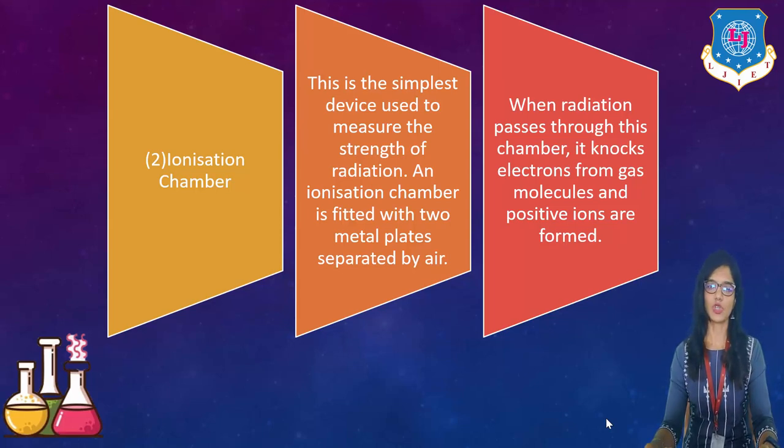Our next one is ionization chamber. So this is the simplest device used to measure the strength of radiation. Here you can measure the strength of radiation. An ionization chamber is fitted with two metal plates separated by air. And when radiation passes through this chamber, it knocks the electrons from gas molecules and positive ions are formed.